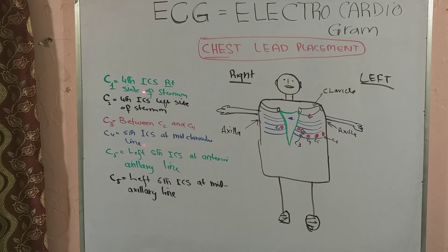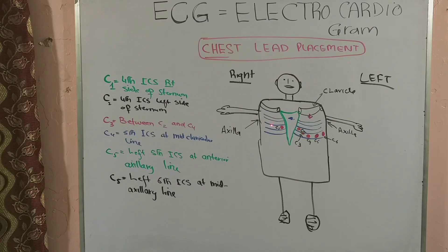The chest lead placement is done with a very particular anatomical positioning. Chest lead one, C1, is placed in the fourth intercostal space on the right side of the sternum, in the right parasternal area. Chest lead two, C2, is placed in the fourth intercostal space on the left side of the sternum, in the left parasternal area.